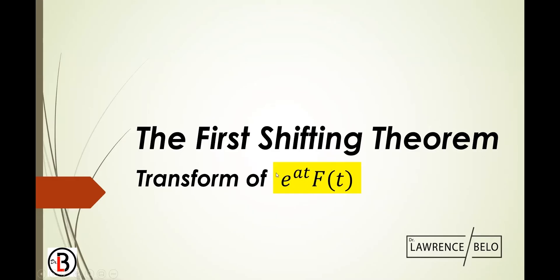Now, it's an f of t together with an e to the at. So this is called the first shifting theorem.